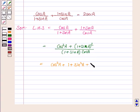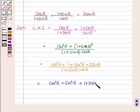So it is 2 into sin A upon 1 plus sin A into cos A. Now again this is equal to cos square A plus sin square A plus 1 plus 2 sin A upon 1 plus sin A into cos A.